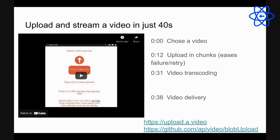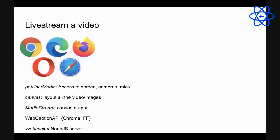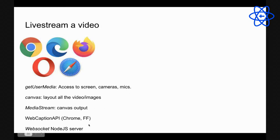The next demo: I want to show doing a live stream straight from the browser. I recorded a video rather than live streaming two different places from one computer. From the browser I use getUserMedia to access the camera, screen, and mic, then lay it all out on a canvas and get the canvas output as a MediaStream.